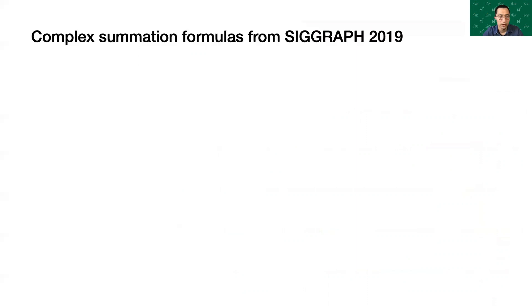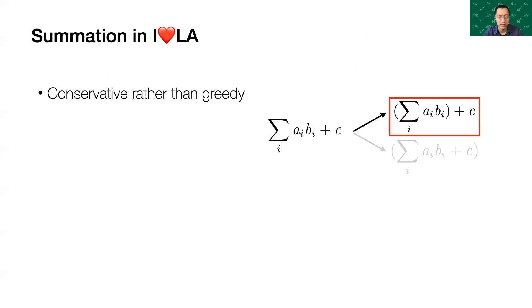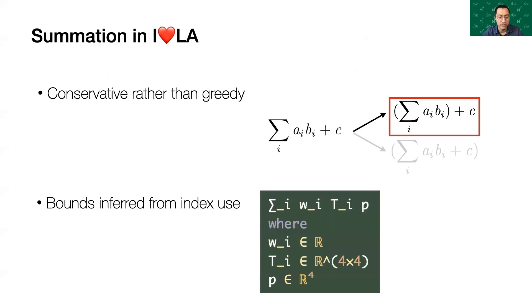For guidance, we also took an empirical approach. We examined 10 complex summation formulas found in SIGGRAPH 2019. Of these, 9 were interpreted correctly with conservative summation. The summation operator in I❤LA is conservative rather than greedy. It only sums the first term to its right, not additional terms separated by addition or subtraction.